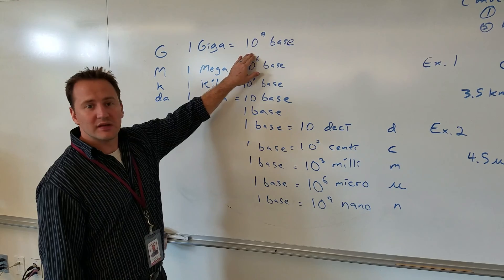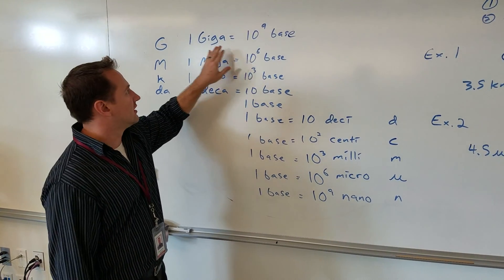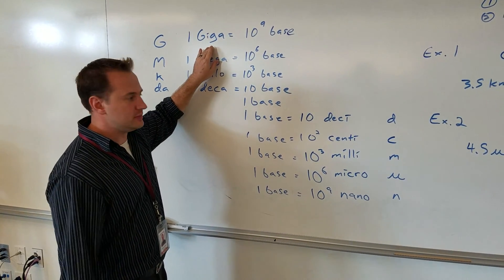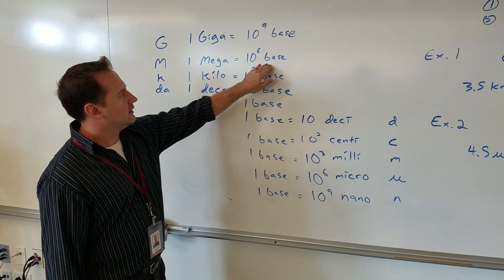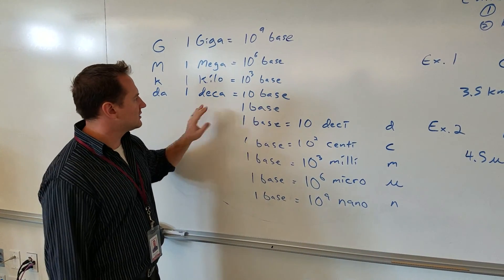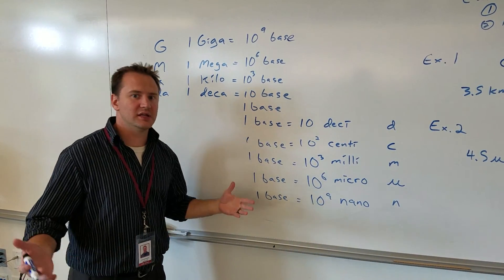So a giga is 10 to the 9th or a billion base units. A gigameter is a billion meters. Mega is a million, kilo is a thousand, deca is 10, like there's 10 years in a decade.